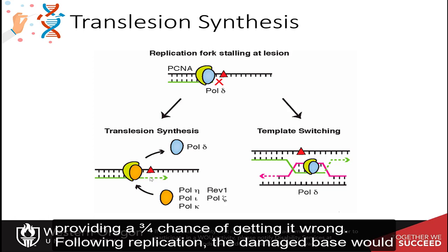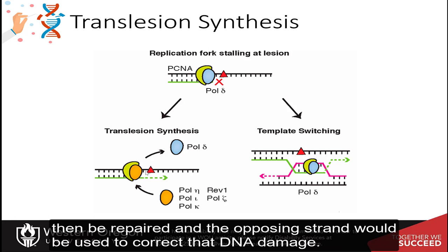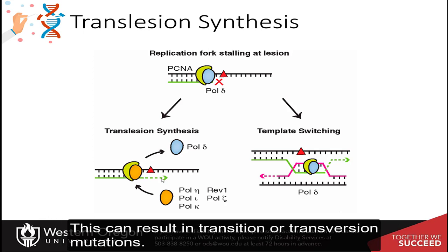Following replication, the damaged base would then be repaired and the opposing strand would be used to correct that DNA damage. This can result in transition or transversion mutations.